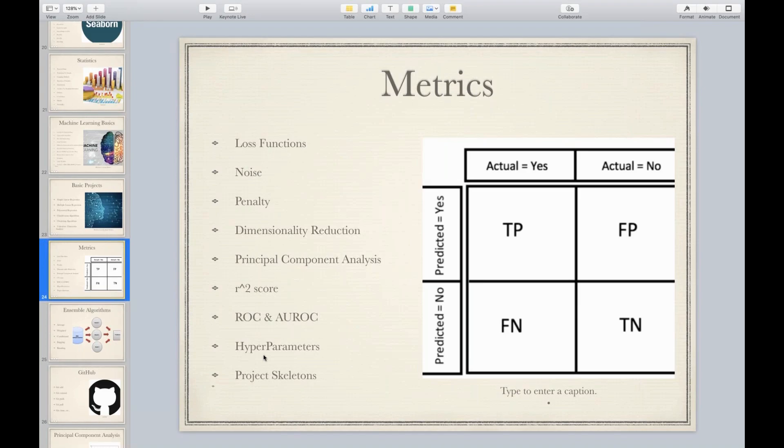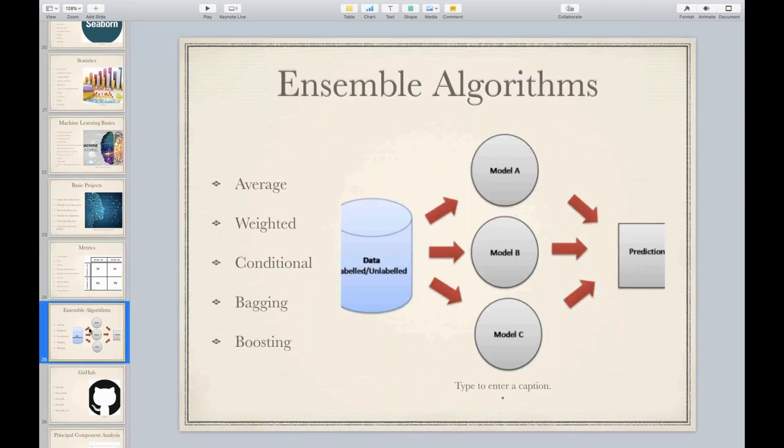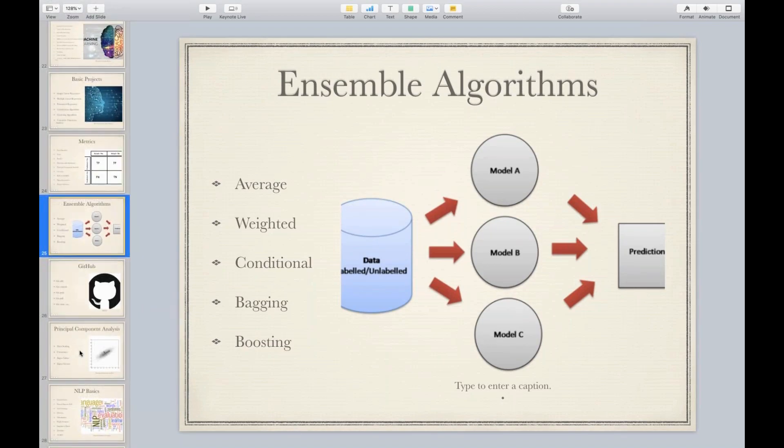And then we'll get into the actual advanced stuff in machine learning like metrics, loss functions, noise, finality, what is ROC and AUROC, what is R2 score, what is MSE, what is RMSE, etc. Once we complete the advanced stuff, we'll get into the ensemble algorithms, which is a mix of algorithms, different sorts of algorithms that help in increasing accuracy compared to applying regular algorithms.